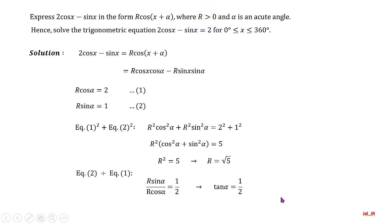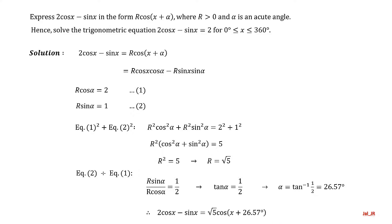r is ±√5, but we choose the positive value as requested in the question. Fourth step: solve for alpha — to get tangent, we divide equation two by equation one. Using a calculator, we get alpha equals 26.57 degrees. Fifth step: using the values of r and alpha, we can express 2·cosine(x) − sine(x) as √5·cosine(x + 26.57°).